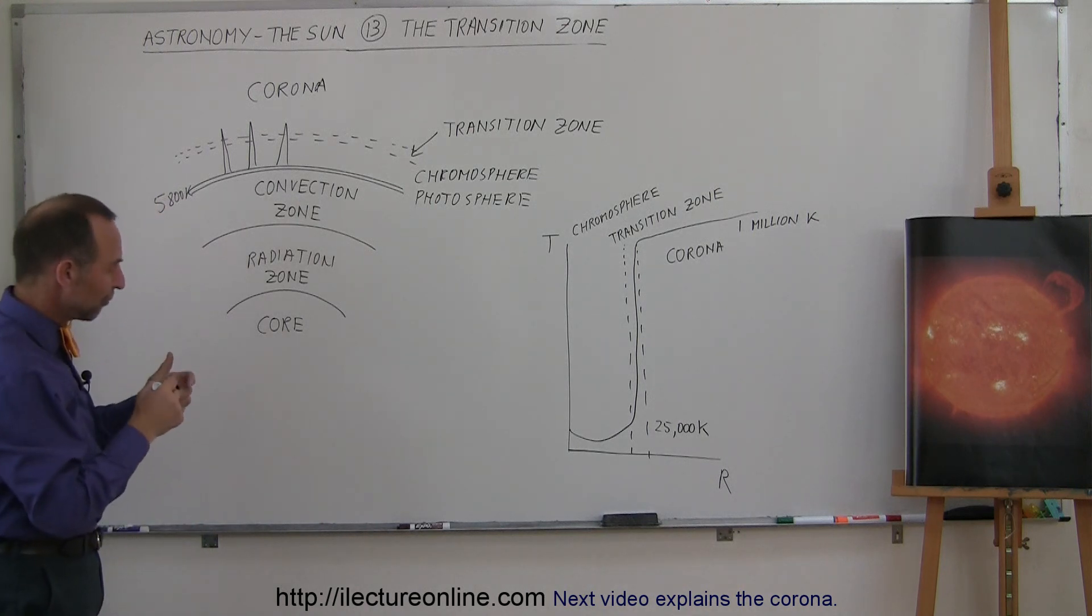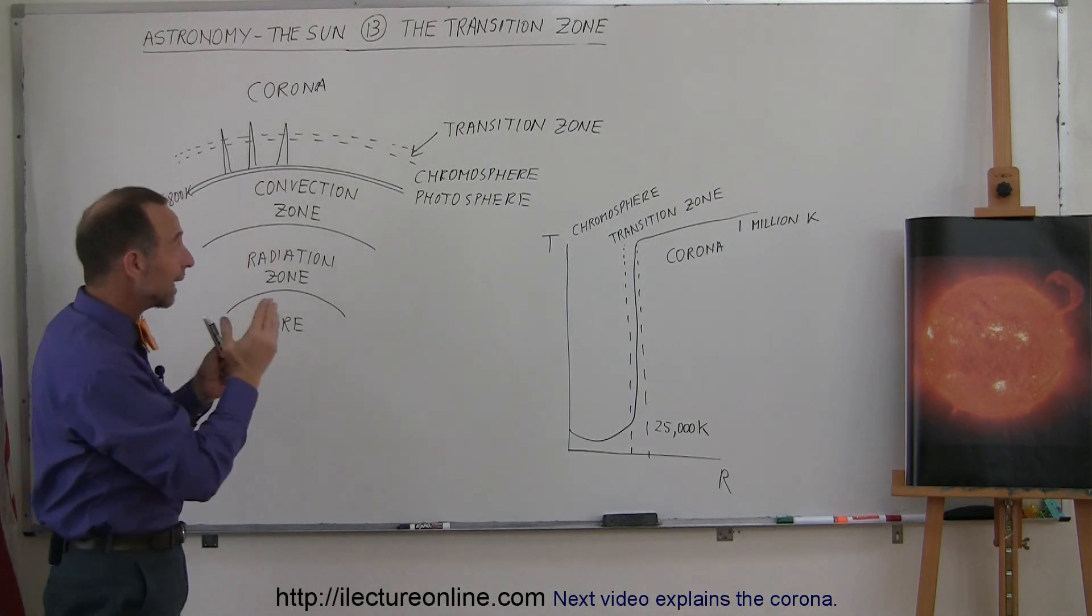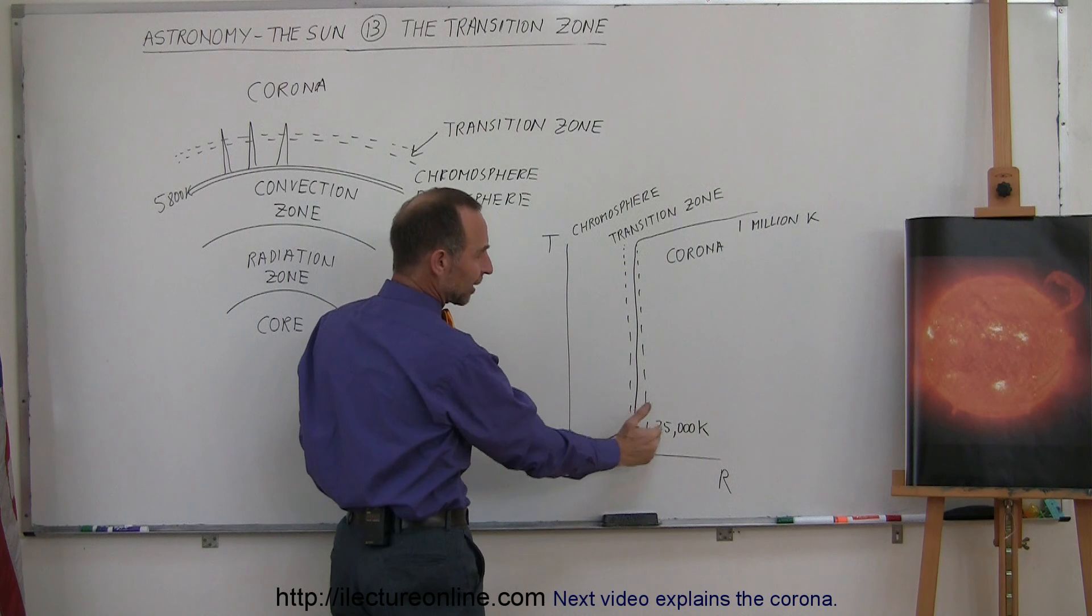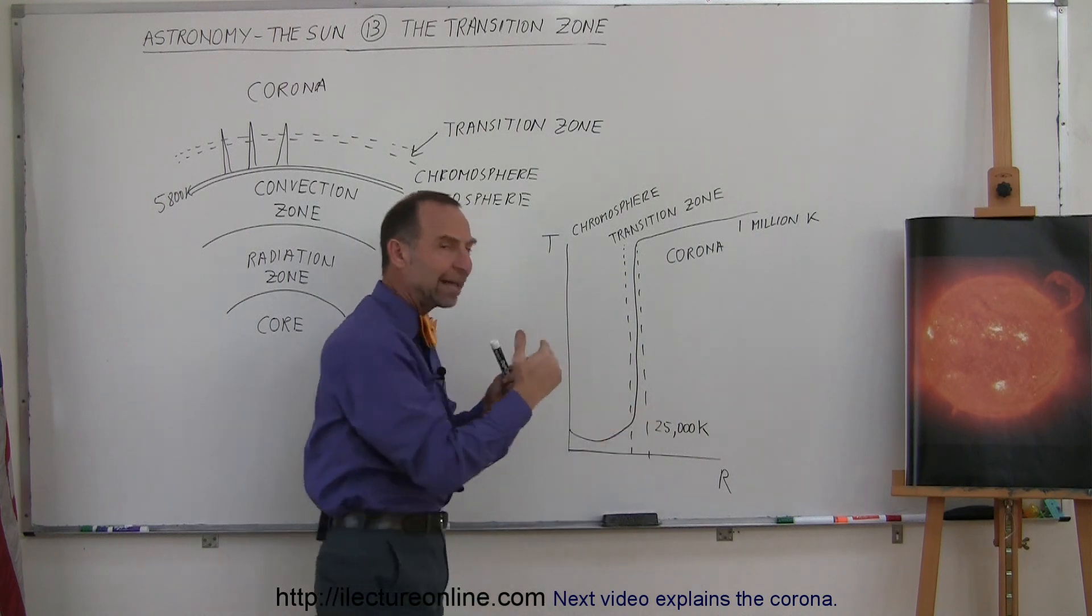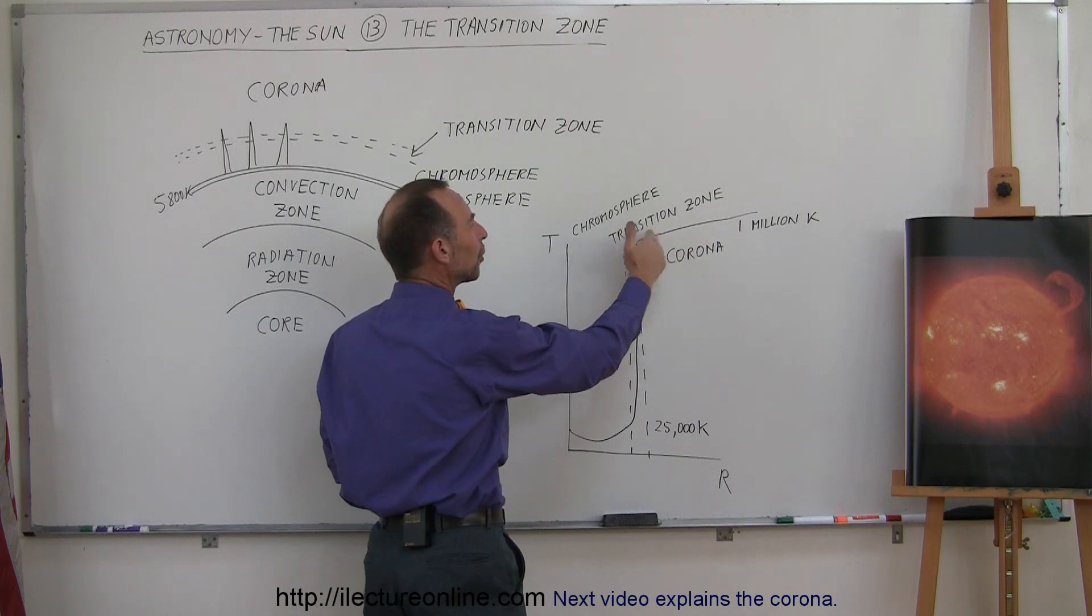But then what we also find is that there's this very thin region we call the transition zone, because in that region, the temperature goes from maybe a maximum of 25,000 Kelvin at the far edge of the chromosphere to over a million degrees Kelvin where the corona starts.